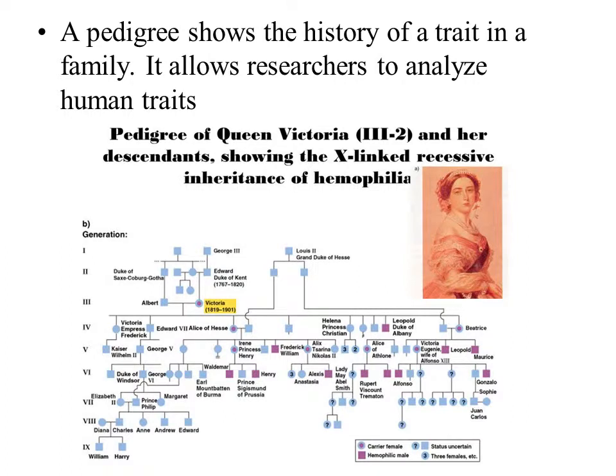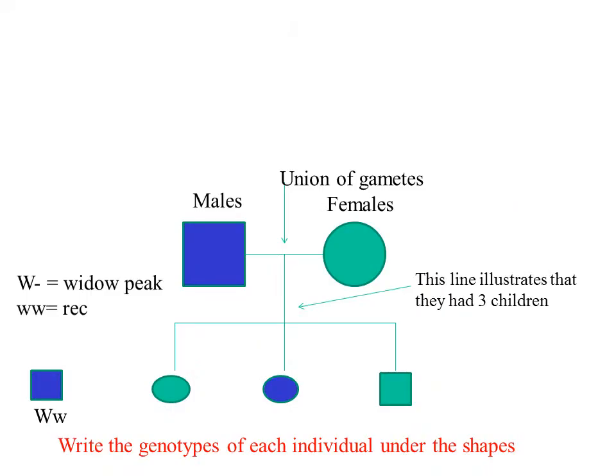We will now look at a pedigree. A lot of farmers and dog breeders like to know the origin of traits in their livestock, so a pedigree analysis can be performed to do that. A pedigree can also be used in research and to look at family traits. In this image we're looking at Queen Victoria and an X-linked recessive inheritance trait called hemophilia. For human studies, this is how we can utilize a pedigree for the trait called widow's peak.